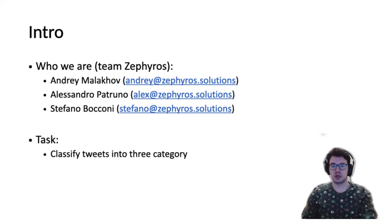Hello everyone, my name is Andrey Malachov and today I will present our solution for the 5G fake news track from E-Evo 2020 on behalf of Zephyrus team. We are three people: Alessandro Patrona, Stefano Bacconi, and me, Andrey Malachov, working on predicting whether a tweet belongs to one of three categories: 5G conspiracy, other conspiracy, or non-conspiratorial tweets.